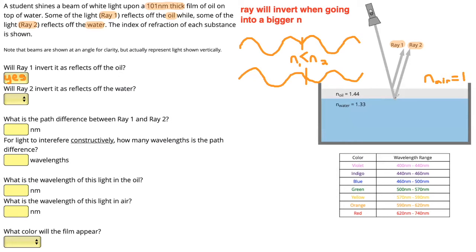Next, when ray two reflects off the water, we're looking at the boundary between the oil and the water. Oil has a refractive index of 1.44 and water has a refractive index of 1.33. So the refractive index is decreasing, and therefore ray two is not going to invert. The answer is no.